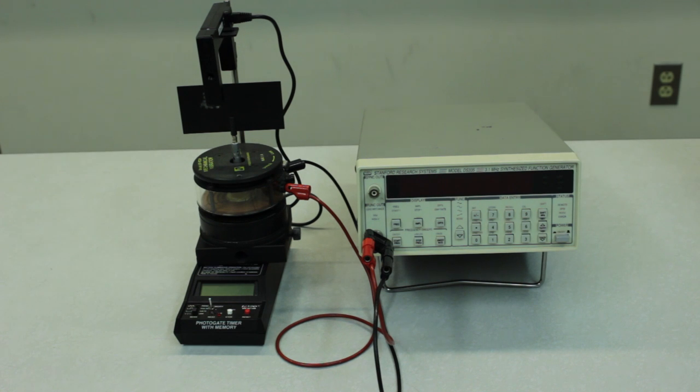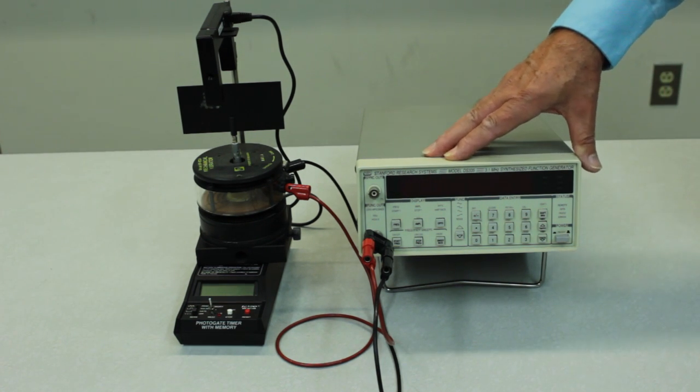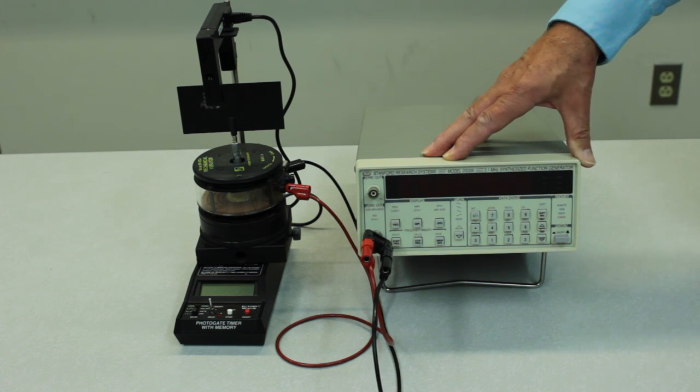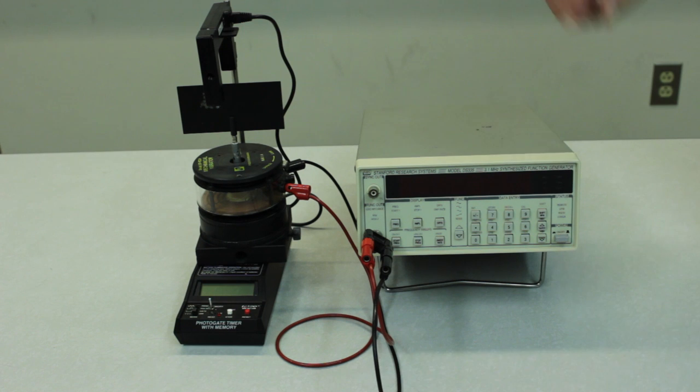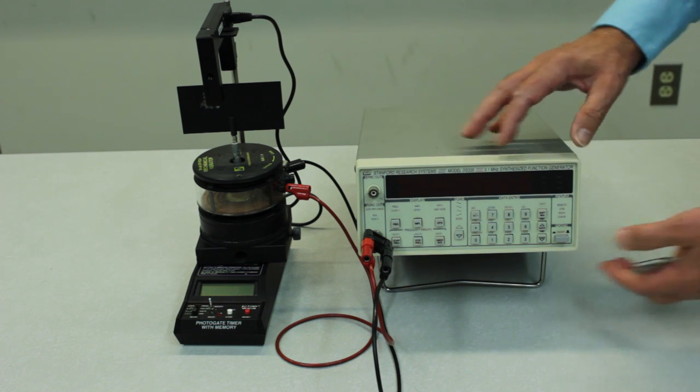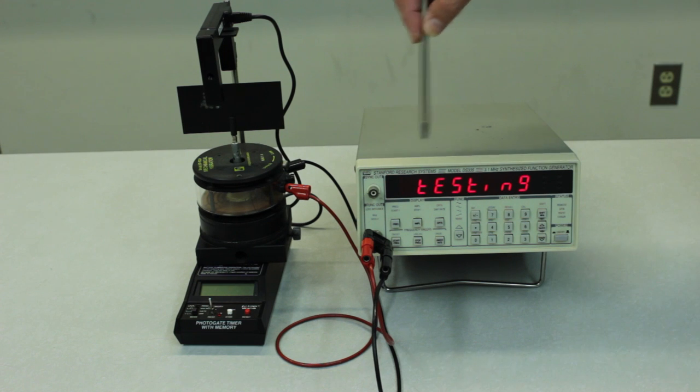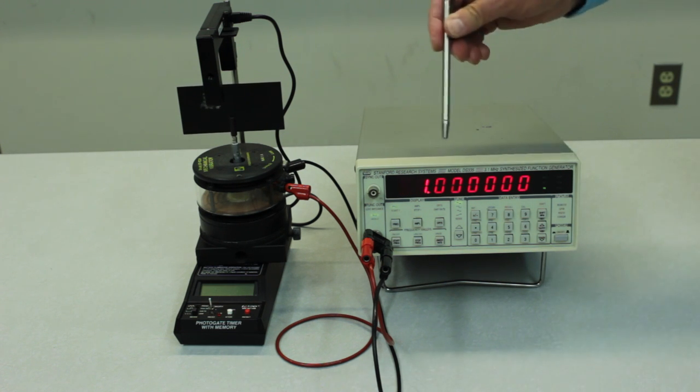The photogate timing device calibration routine involves the use of a digital function generator whose purpose is to provide a very precise, very accurate time signal to trigger the device. So we turn this on, and it goes through a self-calibration routine, and it should say test passed, and then default to the frequency display.